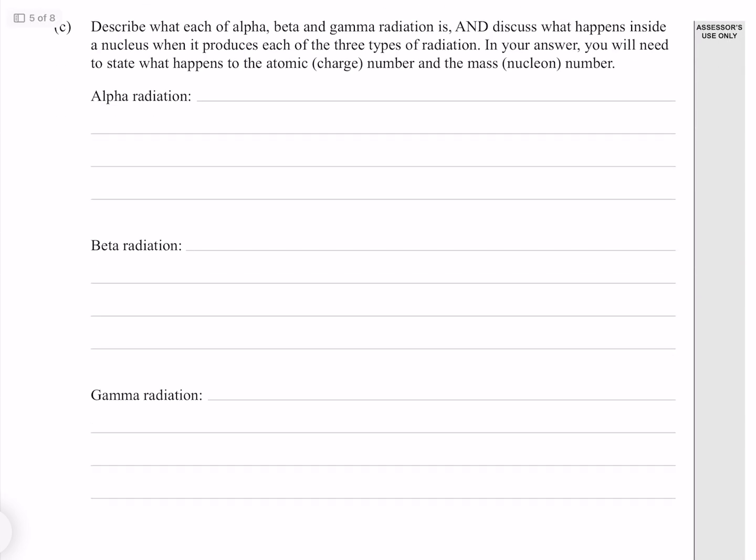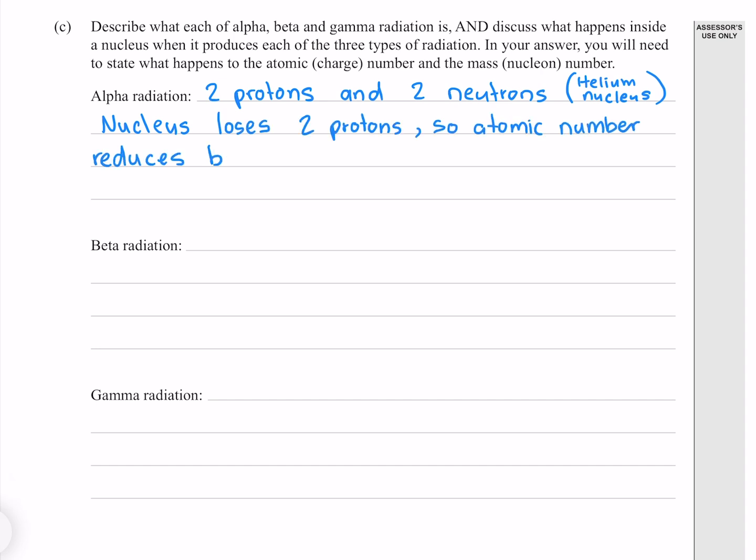Describe what each of alpha, beta, and gamma radiation is, and discuss what happens inside a nucleus when it produces each of the three types of radiation. In your answer, you will need to state what happens to the atomic charge number, and the mass nucleon number. Alpha radiation consists of two protons and two neutrons, or in other words, is a helium nucleus. The nucleus loses two protons, so the atomic number reduces by two, and it loses four nucleons, so the mass number reduces by four.